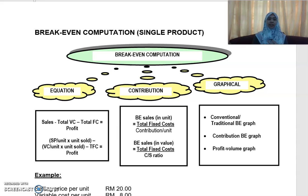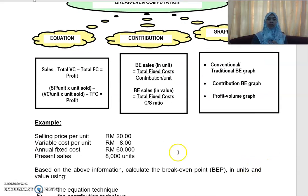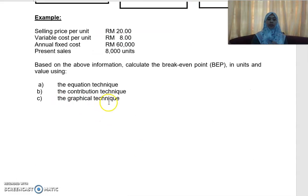Next, I'm going to explain to you the third method to compute your break-even. You can use the graphical technique to compute your break-even. We are still in the same example: the selling price per unit is 20, your variable cost per unit is 8, and your annual fixed cost is RM60,000. Now we are using the graphical technique to compute your break-even point.